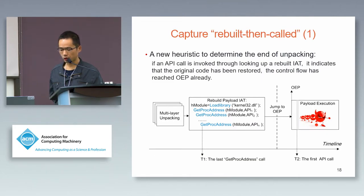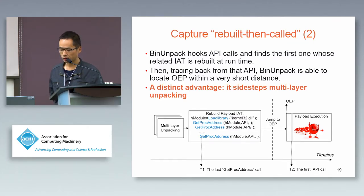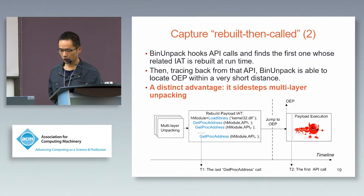Based on these common features, we find a new heuristic to determine the end of unpacking: if an API call is invoked through looking up a rebuilt IAT, it indicates that the original code has been restored and the control flow has reached the OEP already. Bing Unpack hooks API calls and finds the first one whose related IAT is rebuilt at runtime, then traces back from that API to locate the OEP within a very short distance. In this way, Bing Unpack has a distinct advantage — it sidesteps multiple-layer unpacking.